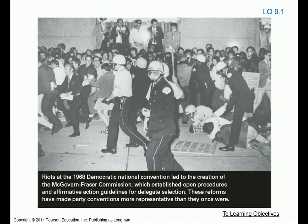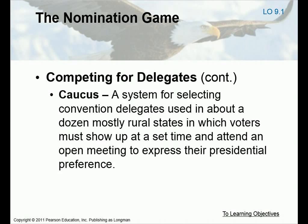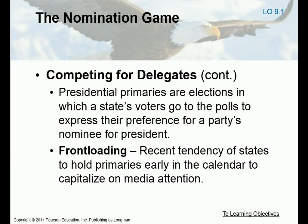Here is a picture of the riots happening in 1968 at the Democratic National Convention that led to the creation of the McGovern-Fraser Commission. This commission was established because open procedures and affirmative action guidelines were needed for the selection of delegates, and these reforms have made party conventions more representative since 1968. A caucus is a system for selecting convention delegates used in about a dozen mostly rural smaller states where voters show up at a set time and attend an open meeting to express their presidential preference.